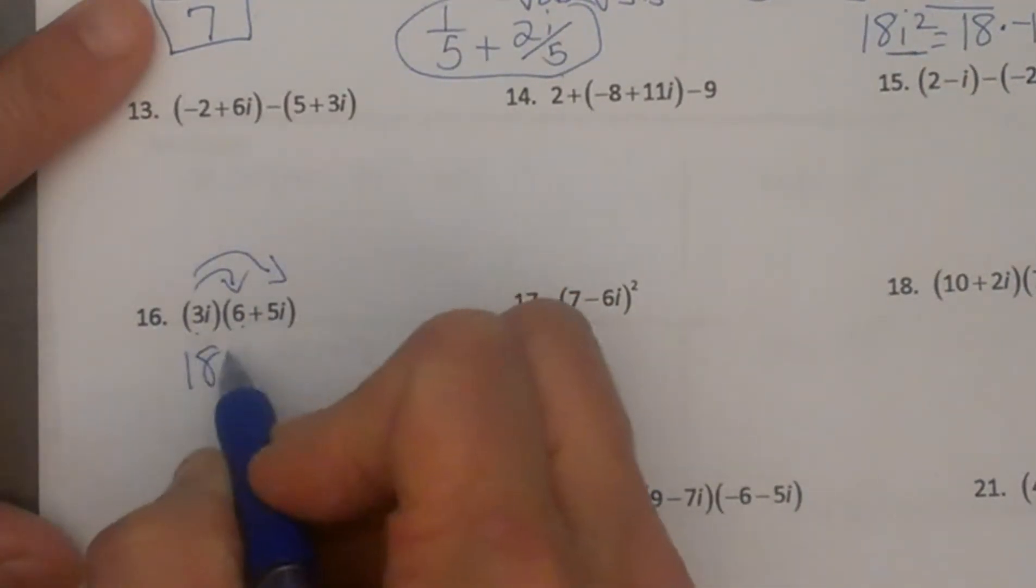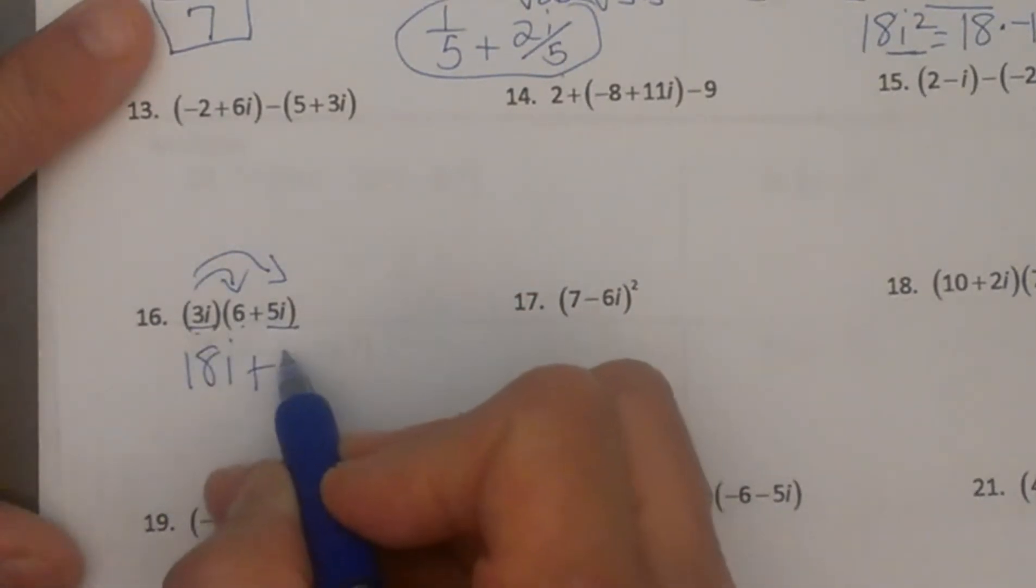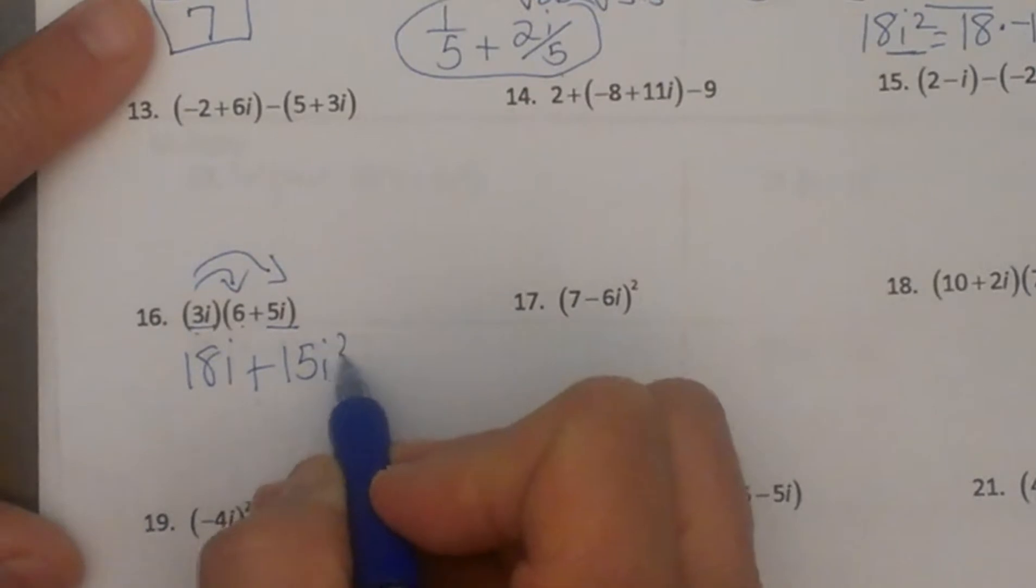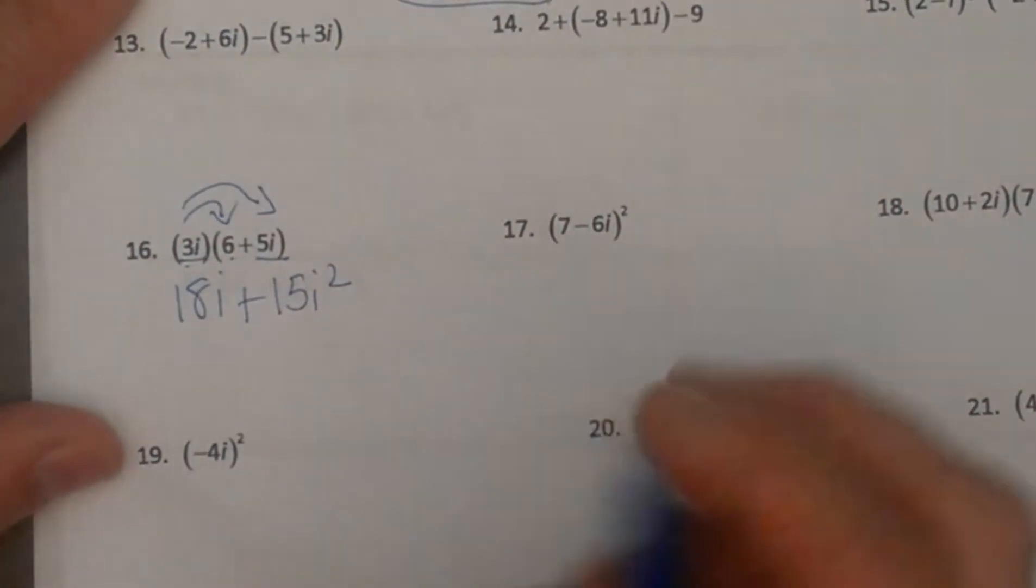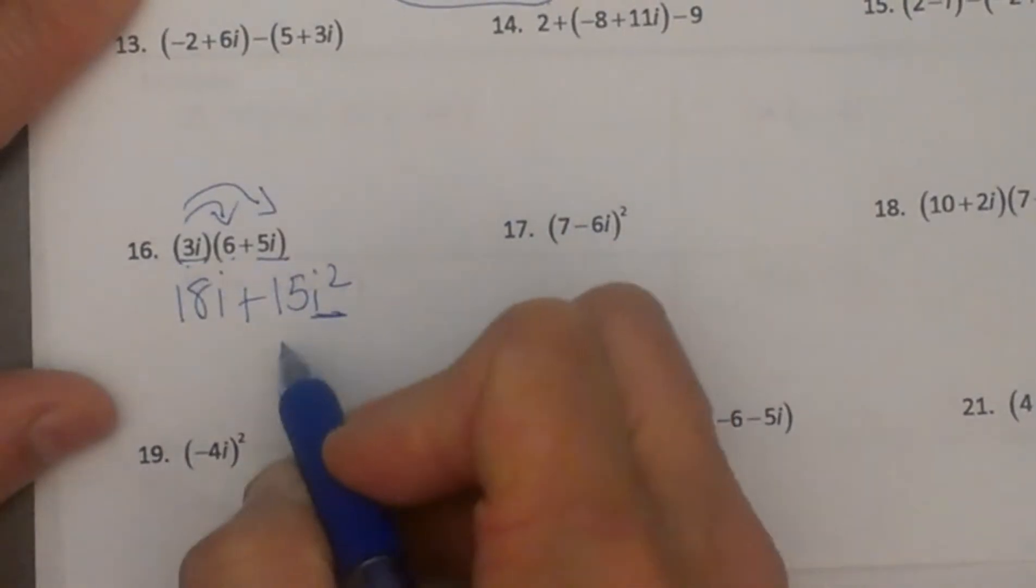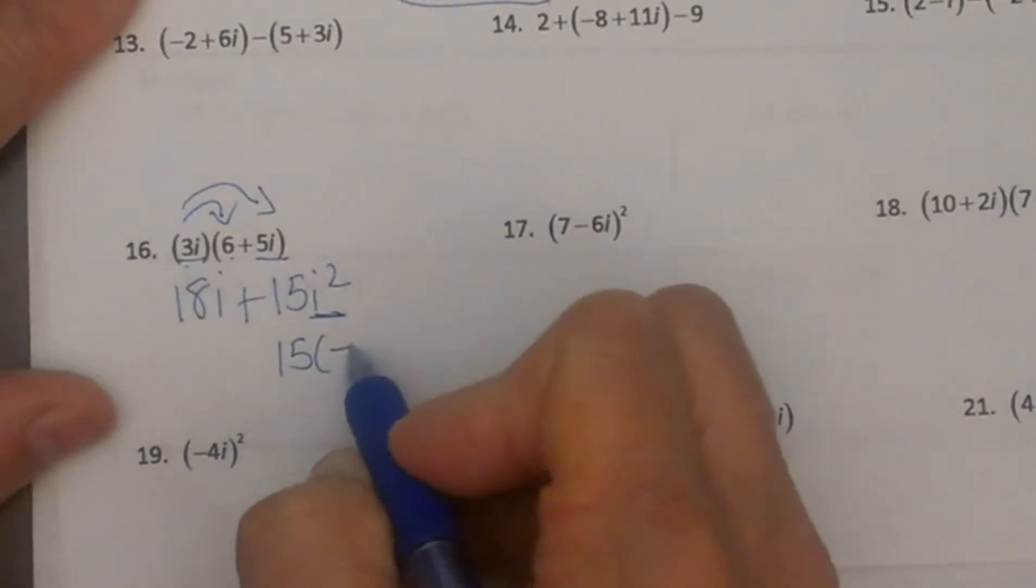Plus 3i times 5i is 15i squared. Well, we know we can't leave i to any other exponent except one, so I am going to replace i squared with the value negative 1 because that is what i squared is equal to.